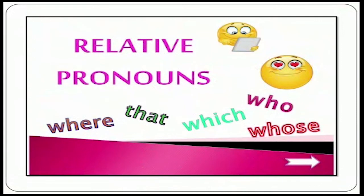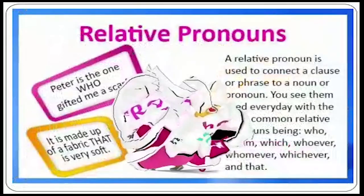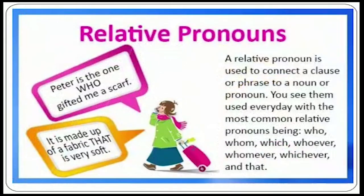Now, what do you understand by relative pronouns? Where, that, which, who, whose, whom — these are all relative pronouns. Relative pronouns are used to join a phrase or a clause with another in a sentence. Like: 'Peter is the one who gifted me a scarf.' Here, 'who' is the relative pronoun because it is joining the two phrases: 'Peter is the one' and 'gifted me a scarf.' Also: 'It is made up of a fabric that is very soft.' Here, 'that' is the relative pronoun.